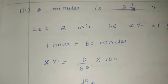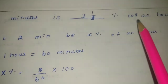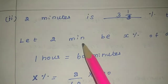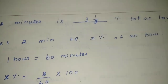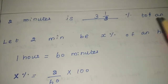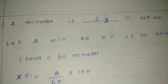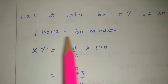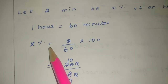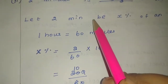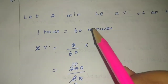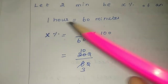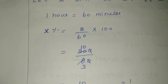Second problem: 2 minutes is dash percentage of 1 hour. Let 2 minutes be x percentage of 1 hour. So, 1 hour equals 60 minutes. Now, x percentage of 60 minutes equals 2 minutes. To find x, we convert 2 minutes out of 60 minutes into a percentage, multiplying by 100.